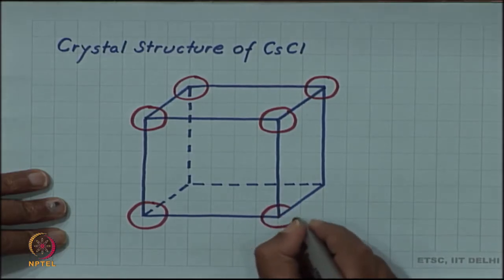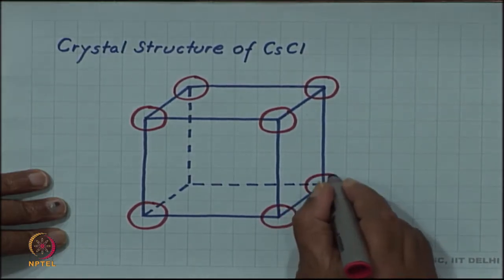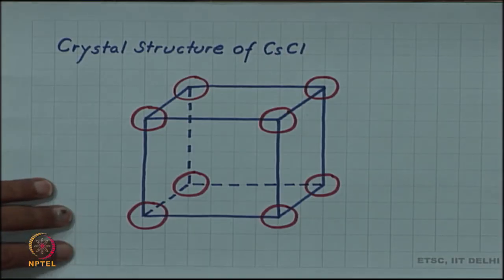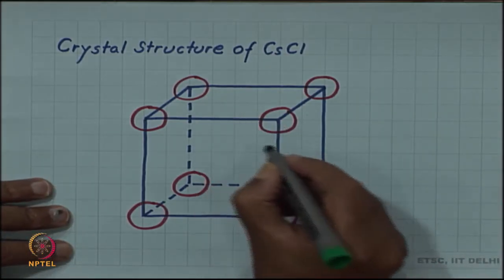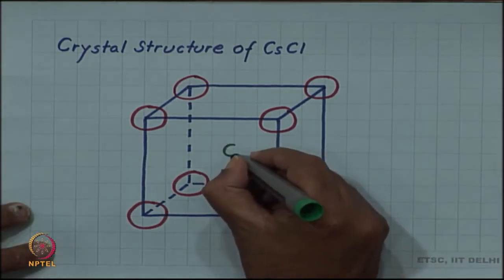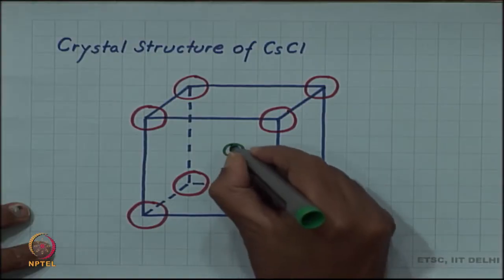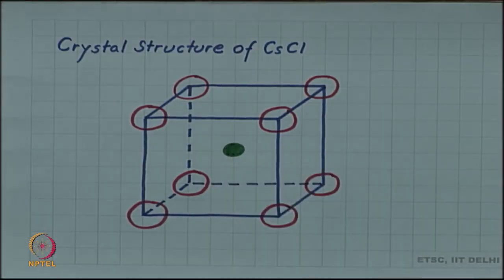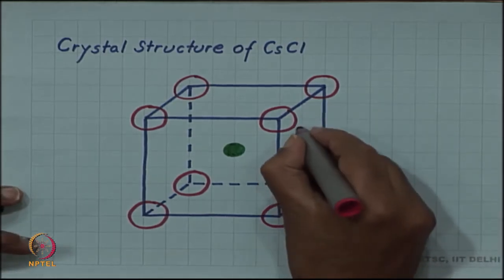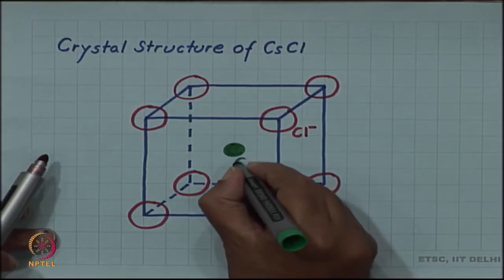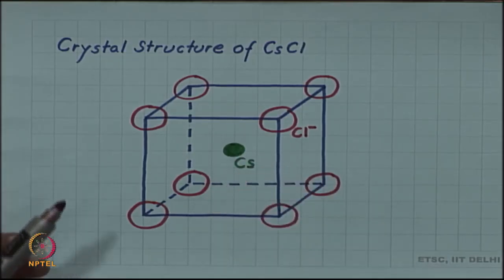In the cube center, place the caesium ion. These are chloride ions and this is the caesium ion.